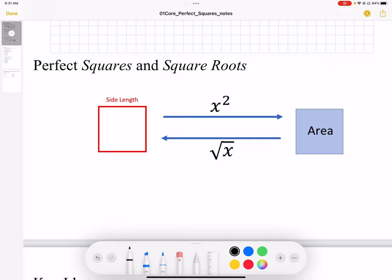When we talk about perfect squares and square roots, when we square something, we're taking a side length—the edge length—and when we square it, we go from side length to perfect square area. The square root is going in the opposite direction.